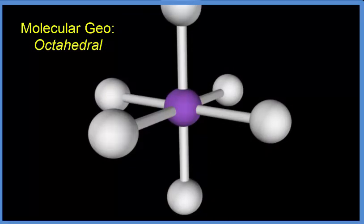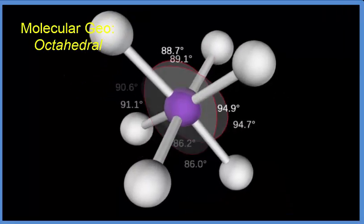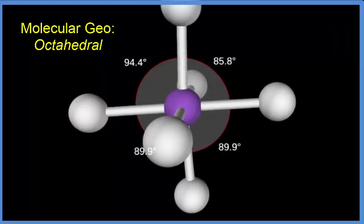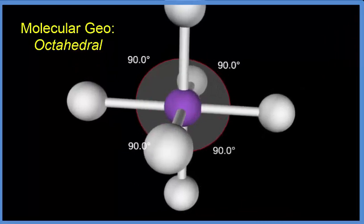If we looked at the bond angles for this SF6 molecule we'd see that they're all 90 degrees. So no matter how you move this you're going to end up with bond angles of 90 degrees. This is our octahedral molecular geometry for SF6.